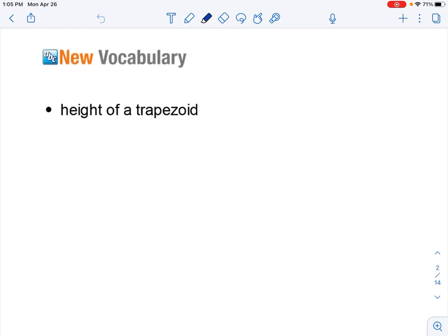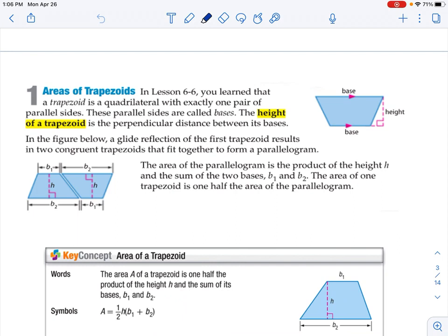Our only new vocab for today is height of a trapezoid because we covered the rest of the vocab in Chapter 6. Part 1, Areas of Trapezoids. In Lesson 6-6, you learned that a trapezoid is a quadrilateral with exactly one pair of parallel sides. These parallel sides are called bases. The height of a trapezoid is the perpendicular distance between its bases. Notice a couple things: the bases have to be parallel, the height has to come down at 90 degrees, and because the bases are parallel, the height is perpendicular to both of the bases.